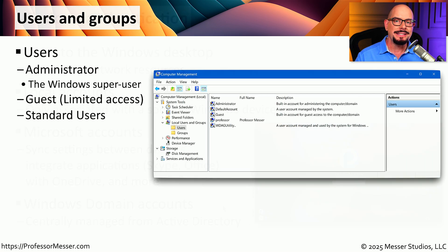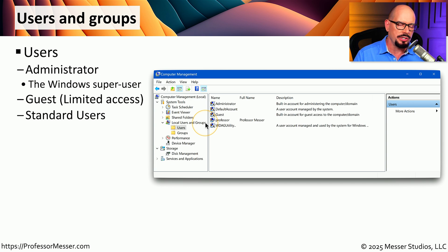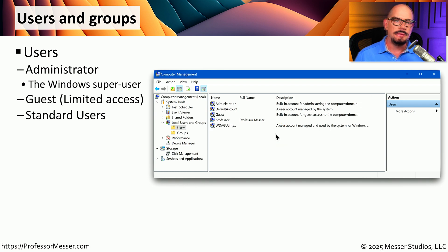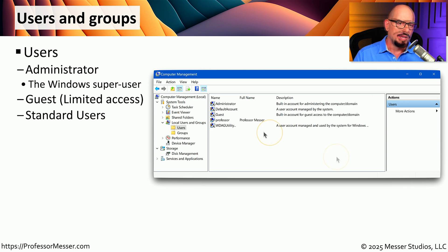If you'd like to see all of the local users that are defined on your computer, you can go to Computer Management and choose the option for Local Users and Groups. This will provide a list of all of the users and all of the groups that are defined on this local computer. Even if you've not configured any accounts on this Windows device, there are a few that are enabled by default.